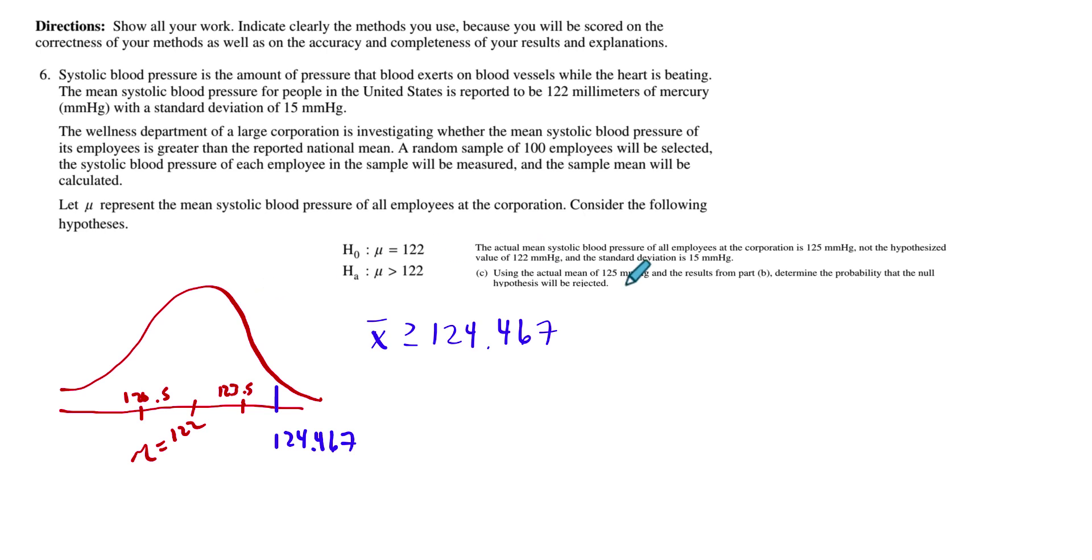They want us to determine the probability that the null hypothesis will be rejected. So it's going to be rejected whenever x-bar is greater than 124, right? So whenever the sample mean is higher than 124, we're going to reject the null. Let me draw the curve in real life. We'll put that in green.